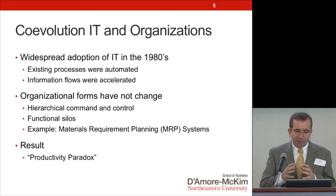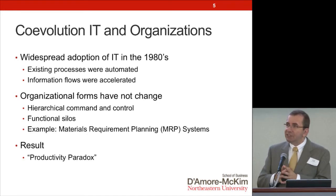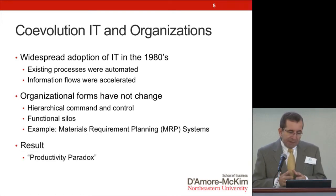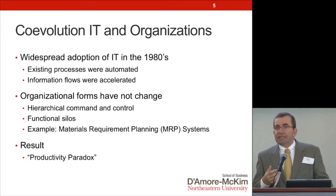What happened was companies were doing the same things they had always been doing. Instead of taking advantage of information technology, they were just substituting computers for people without actually changing the nature of work. The information flows were the same, the tasks were the same — the only difference was things were a little bit faster. Because of this, people started talking about the productivity paradox: all this IT investment but no change in performance. The problem was technological change without matching organizational change.